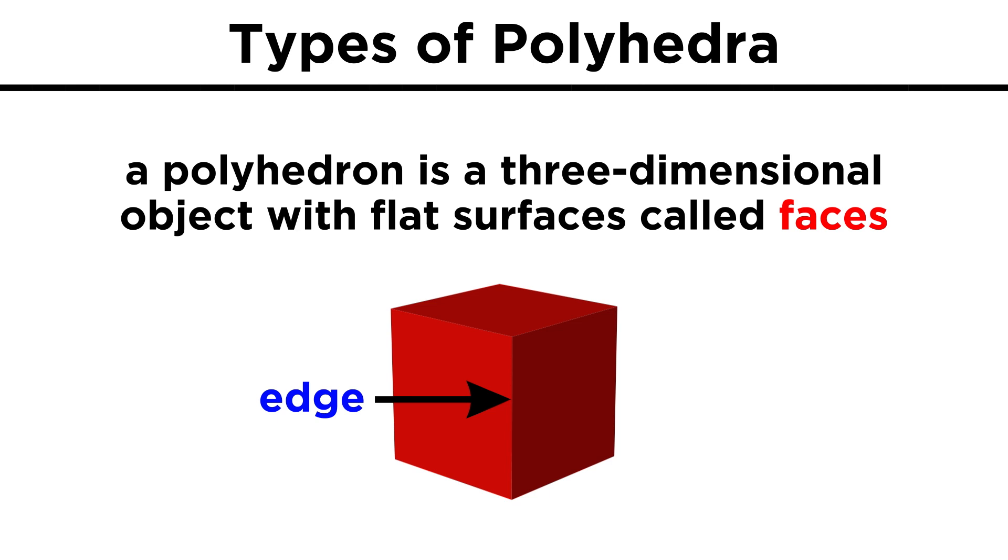Where two faces meet and share a side, this is called an edge, and any point where three or more edges meet is called a vertex.